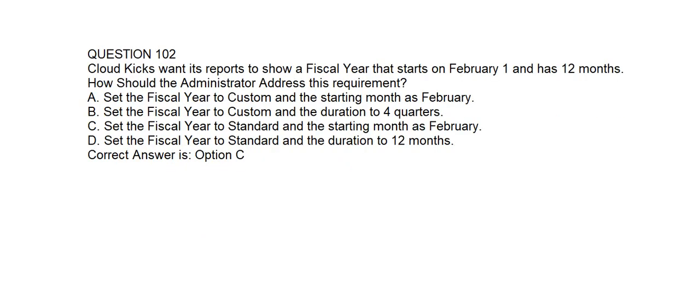Question number one hundred and two. Cloud Kicks wants its reports to show a fiscal year that starts on February 1 and has 12 months. How should an administrator address this requirement? Option A: Set the fiscal year to custom and the starting month as February. Option B: Set the fiscal year to custom and the duration of 4 quarters. Option C: Set the fiscal year to standard and the starting month as February. Option D: Set the fiscal year to standard and the duration to 12 months. Correct answer is Option C.